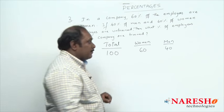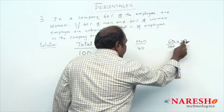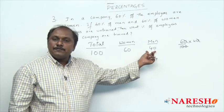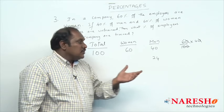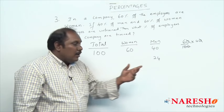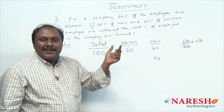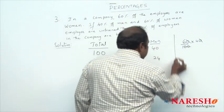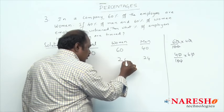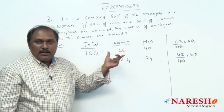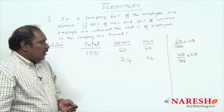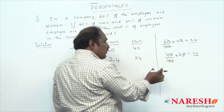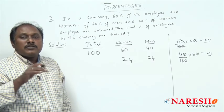Now talking about women: 60 percent of women employees are untrained, so 40 percent of women are trained. 40 percent of 60 is also 24. Here is a useful logic: X percent of Y equals Y percent of X. So 60 percent of 40 and 40 percent of 60 are both 24. Out of 40 men, 24 are trained. Out of 60 women, 24 are trained. Totally 48 employees are trained out of 100.